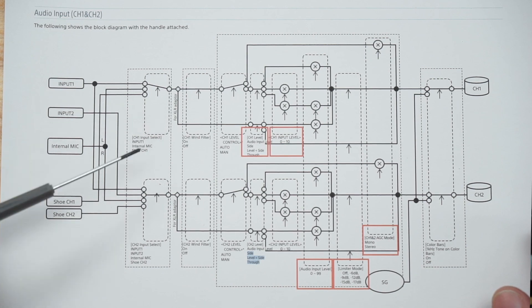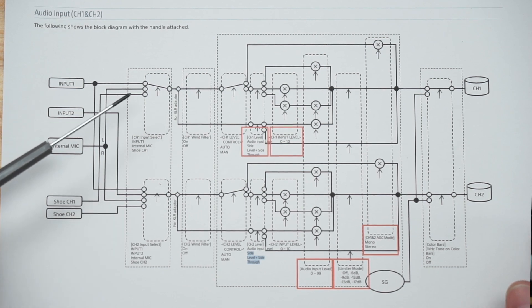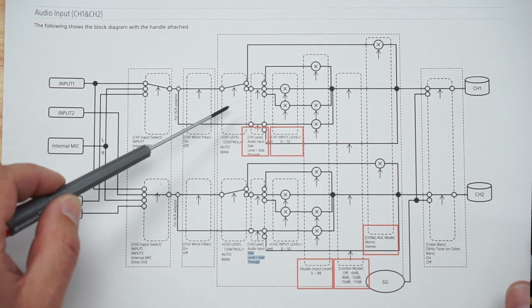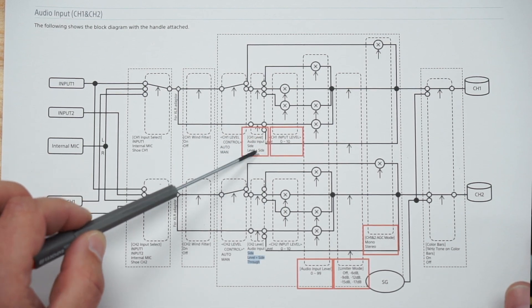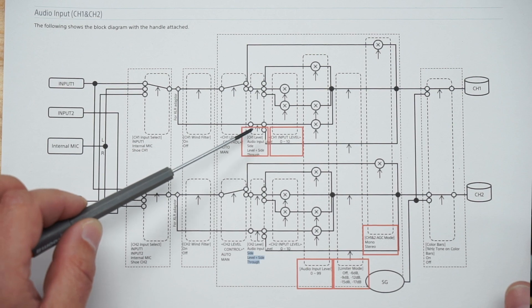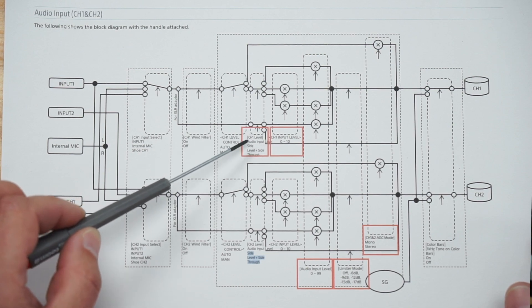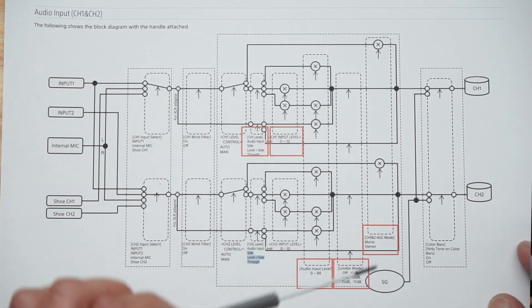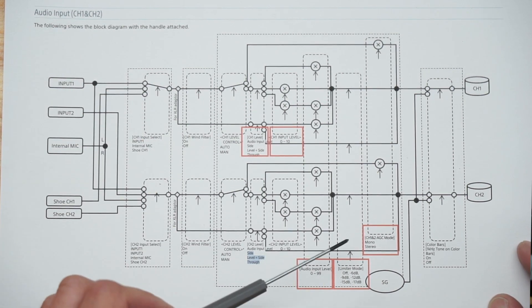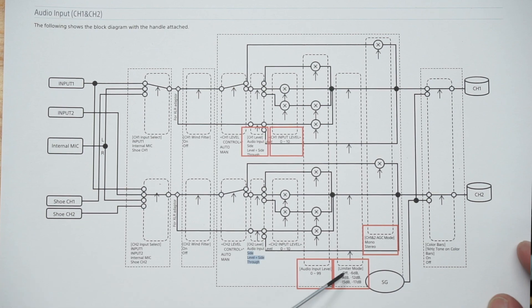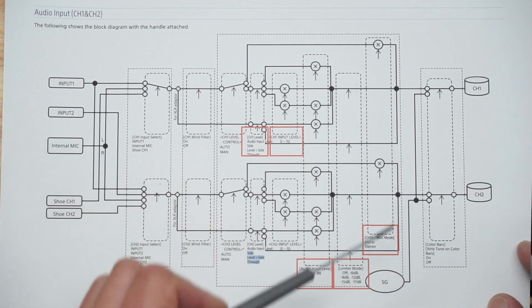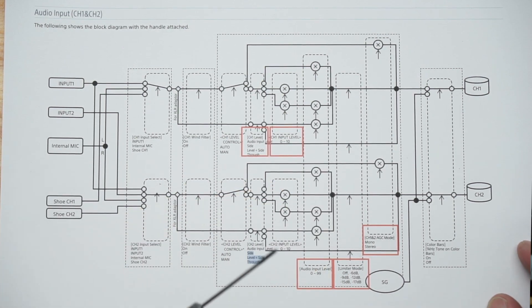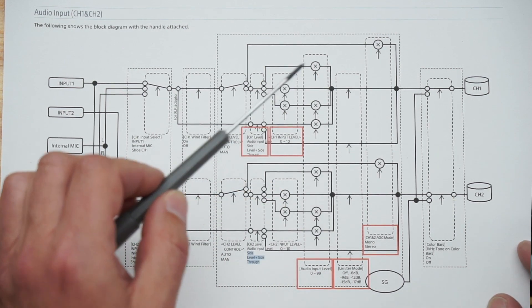Here we have the input section and the full signal flow of the FX6. Several inputs can be switched to channel 1 or channel 2. Then we have the wind filter, then the auto or manual level control, and the option to level by the knobs on the side or via the menu. Then we have the input level overall and a master level, followed by the limiter which can be switched off, and then the AGC which I said was always in the signal flow.